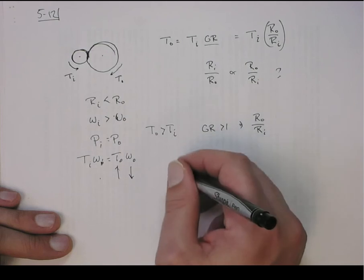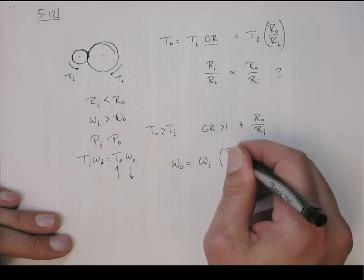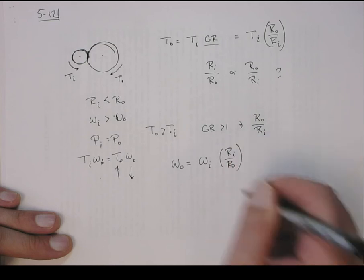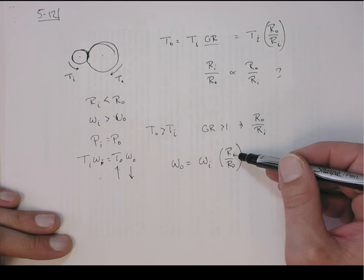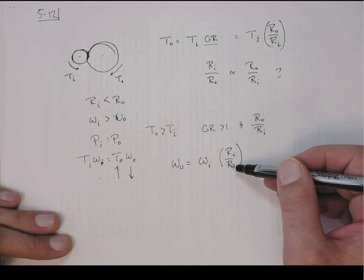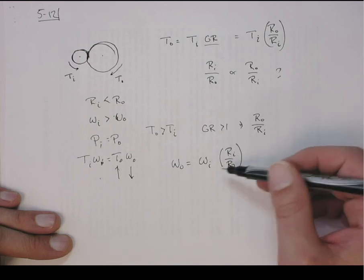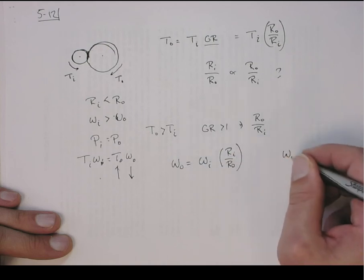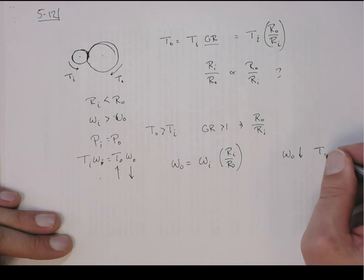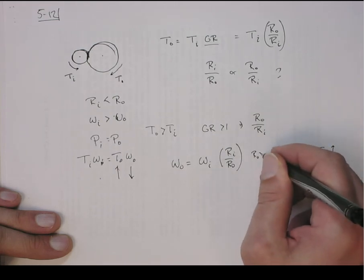The angular speed relationship is the opposite. If the inner radius is smaller than the outer radius, then this number is less than one, and then what it says is the output speed drops. So this drops, and then the torque goes up.